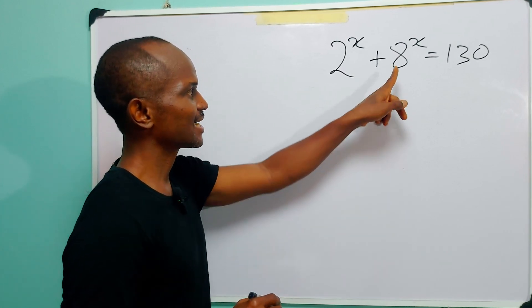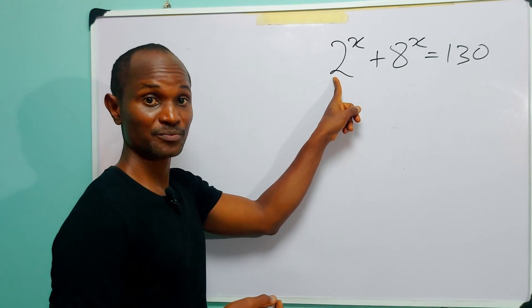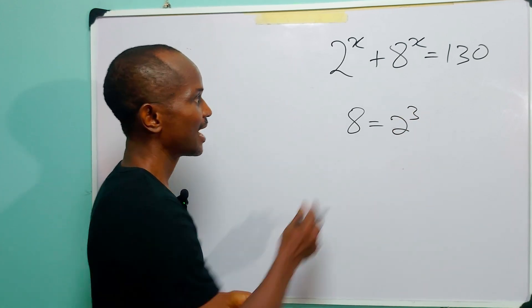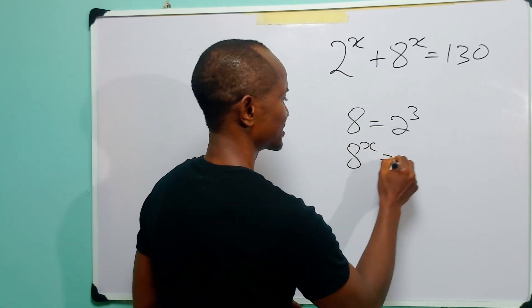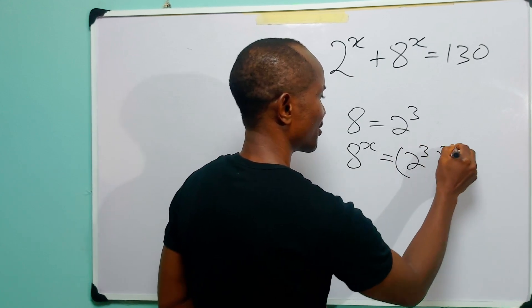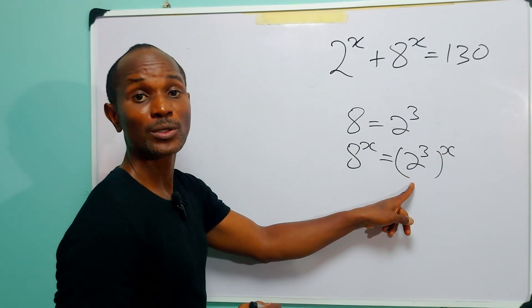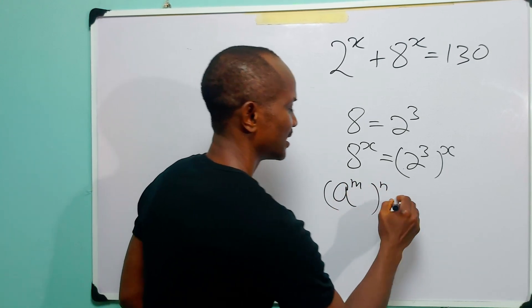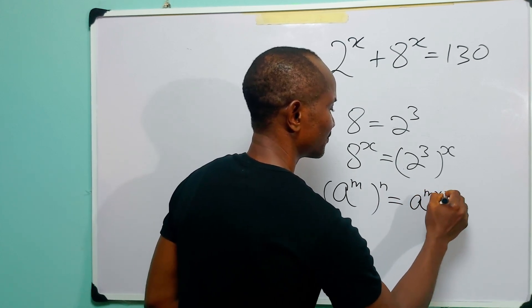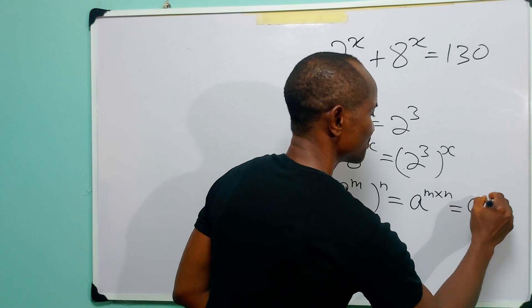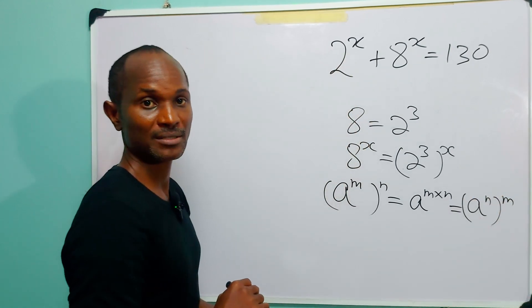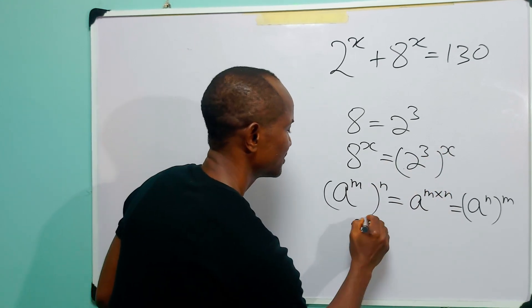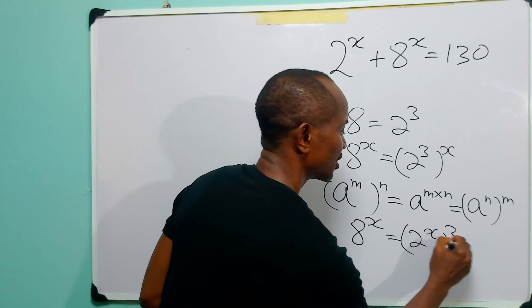The first step is to recognize the fact that we can write 8 as a power of 2. So we have that 8 is equal to 2 raised to power 3, and 8 raised to power x is equal to 2 raised to power 3 raised to power x. Now we recall the law of indices that says a raised to power m raised to power n is the same as a raised to power m times n. So we can switch the places of these two powers and have that 8 raised to power x is equal to 2 raised to power 3x.